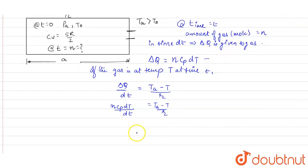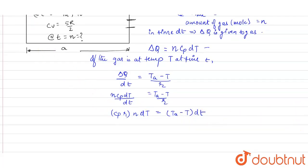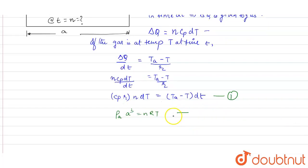Rearranging, we get: Cp · r · n · dT = (Ta - T) · dt. Now using the ideal gas equation PV = nRT, our pressure is atmospheric pressure Pa and volume is A³, so Pa·A³ = nRT. Let this be equation 1. From here we can calculate temperature T = Pa·A³ / (nR). Let this be equation 2.